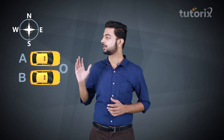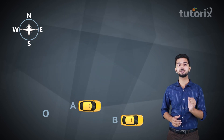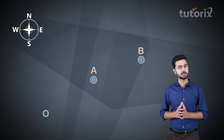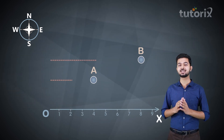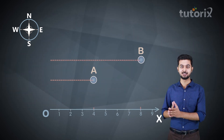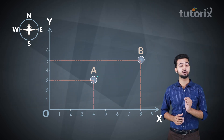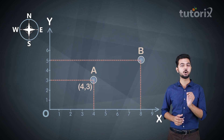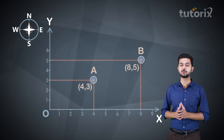To begin with, let's take the help of a scenario in which two cars, car A and car B, are situated at a point O as shown here. Both cars start moving and reach their respective destinations. Considering their initial point O as the origin, let's mark the positive x-axis towards the east direction and positive y-axis towards the north direction. So the final position of car A is (4, 3) and the final position of car B is (8, 5).